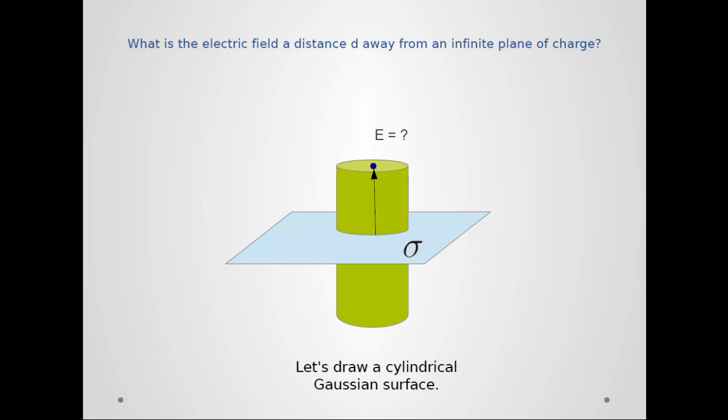First things first, we need to draw a Gaussian surface, and I'm going to choose a cylindrical shape here. We'll see why in a second, but once again, it's always symmetry. The cylindrical shape will introduce a symmetry into the problem that makes the math very simple.